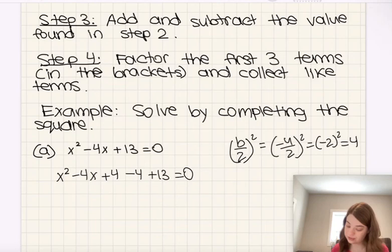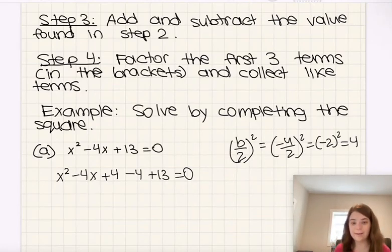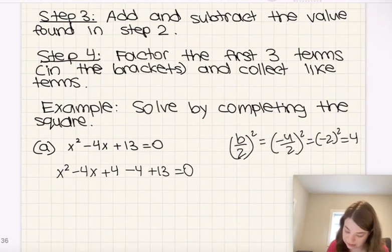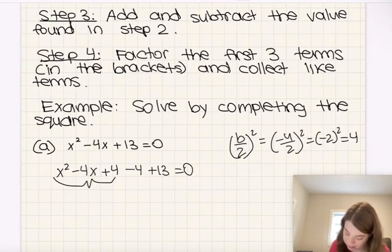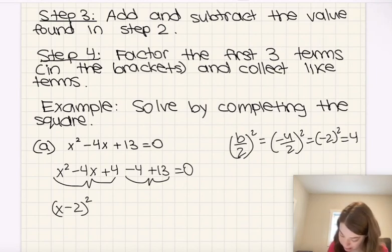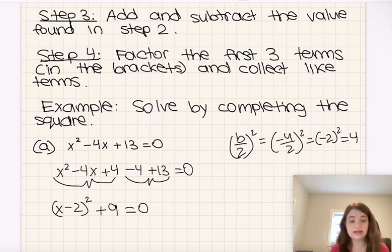Step four says to factor the first three terms in the brackets and collect like terms. In this case there are no brackets, but there will be brackets if we do have to common factor in the beginning — which we didn't here, but sometimes we will. The first three terms factor to be x minus 2 squared. Then collecting like terms: negative 4 plus 13 gives us plus 9, so we have x minus 2 squared plus 9 equals 0. And now we have this in vertex form.